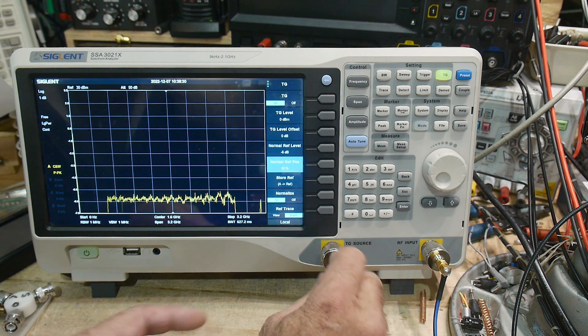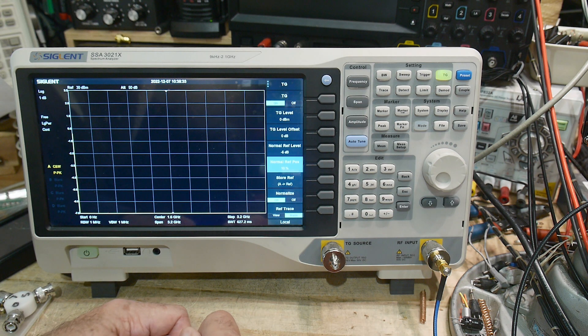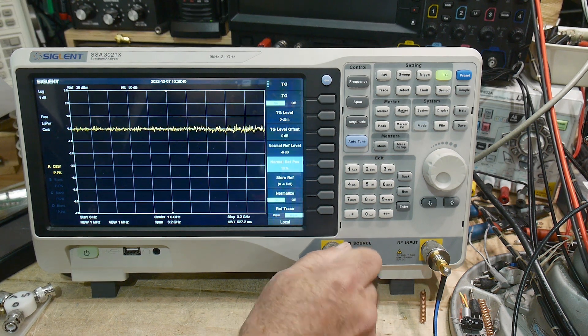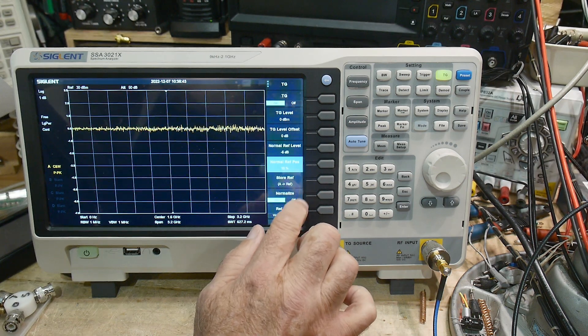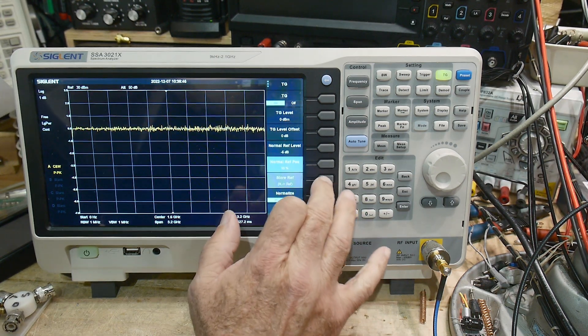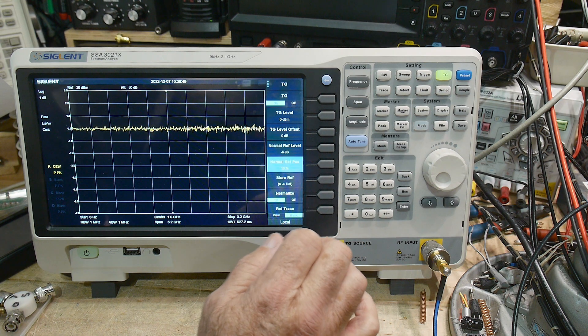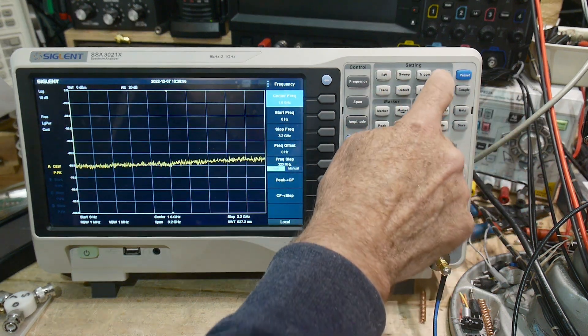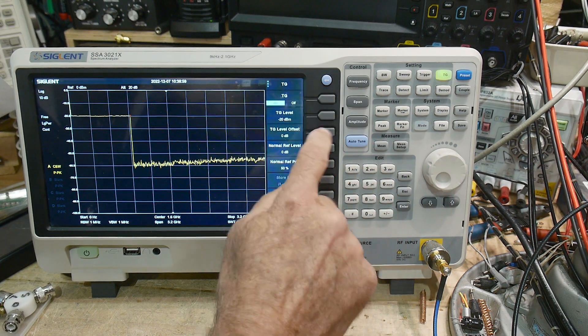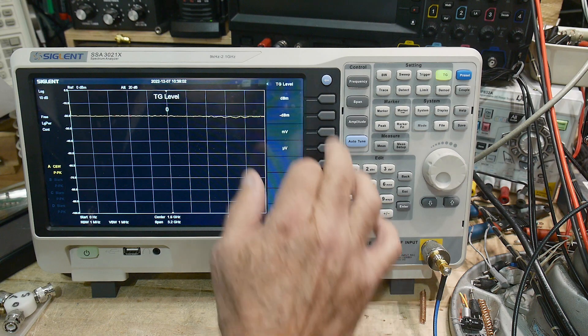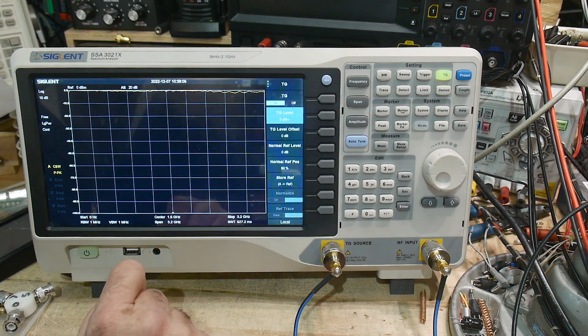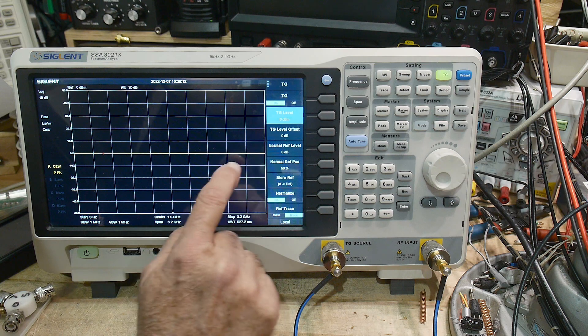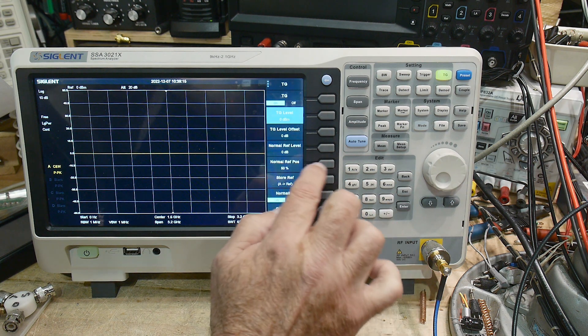A lot of times when you're doing attenuation, let's remove the attenuator again and we will go through the process again. We will say we want to store the reference A, and we want to normalize. Let's do a preset, let's go back to zero because everything's kind of messed up. We'll do a preset, turn on our tracking generator. We'll turn the generator on, we want to have 0 dBm, and it's up there at the top.